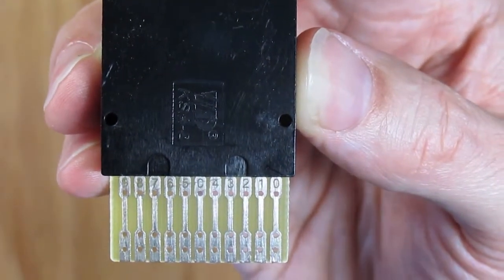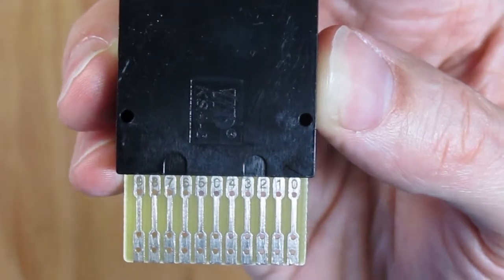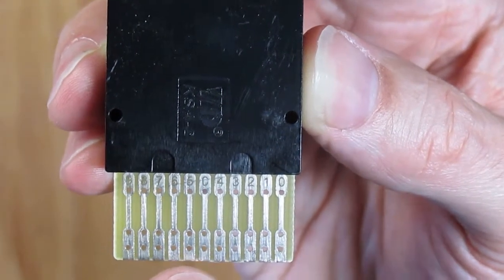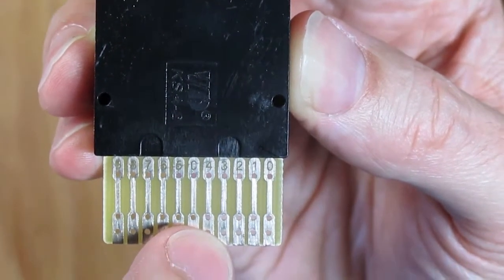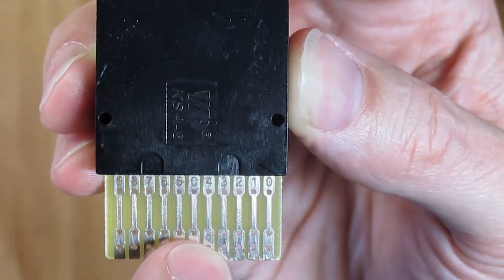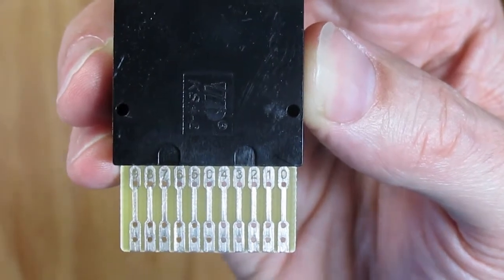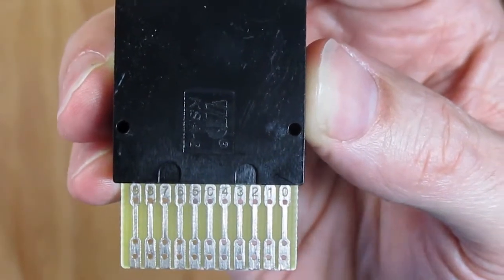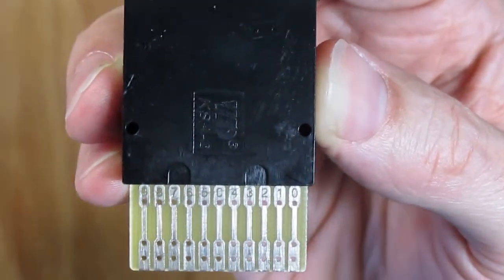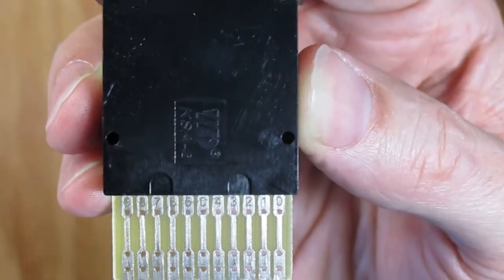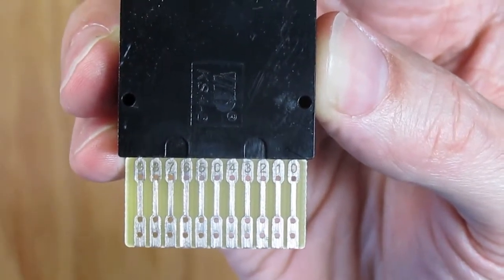By using the thumbwheel, we dial in a particular point along that string of resistors. So if you go to 3, you're going to have 3 resistors in series. If they're 1 ohm resistors, you have 3 ohms, which is what the number 3 will correspond to on the front of the thumbwheel switch.